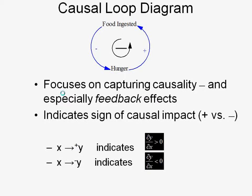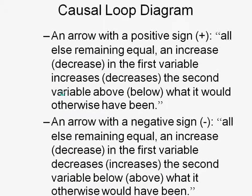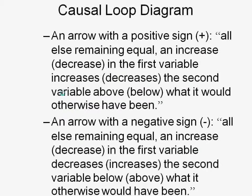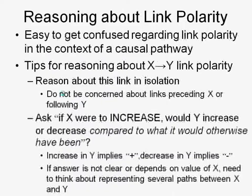For those mathematically inclined, polarity can be formulated as a partial derivative: the change in Y given a small positive change in X — that ratio is less than zero, meaning they have opposite signs. If we increase X, it leads to a decrease in Y. The key is 'all other things being equal' — it's compared to what it would have been otherwise, not simply whether the variable goes up or down over time.